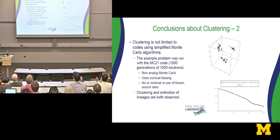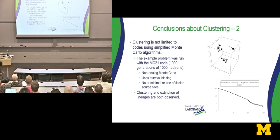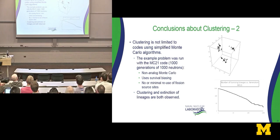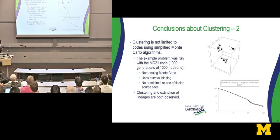I used a toy Monte Carlo code for this analysis because it allows analytical solutions. I also ran the same problem using MC21, our production code, for 1,000 generations with 1,000 neutrons. MC21 uses non-analog Monte Carlo with survival biasing and minimizes reuse of fission source sites. Still, at the end of 1,000 generations, three distinct clusters — three families — remain. This confirms the effect occurs with real production Monte Carlo codes. The acknowledgements go to my co-author Anya Mittle, Professor Zoia at CEA France, and Professors Osborne and Akcasu for providing the mathematical techniques needed to solve this problem. Thank you.